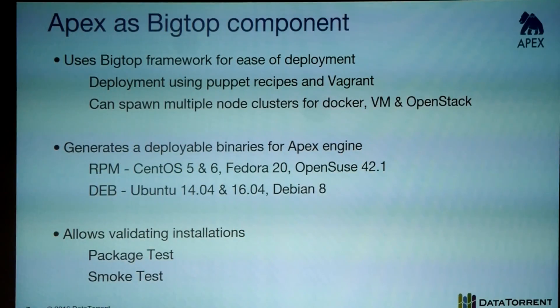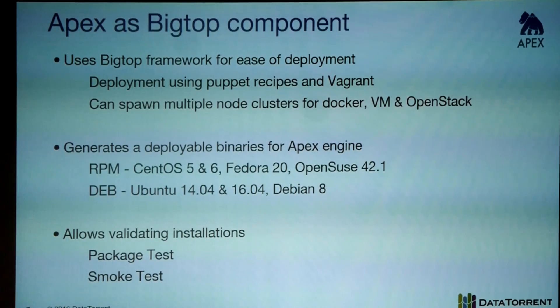Now let's jump into the BigTop world. BigTop has made a lot easier for Apex because one of the key features it provides is deployment. It provides puppet recipes and uses Vagrant for easy deployments into a cluster. The three-node cluster it offers is a fantastic way to test your applications. You can spawn multi-node clusters for Docker, VMs, and OpenStack as well — that's a great feature BigTop provides.